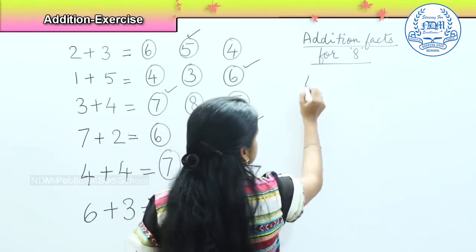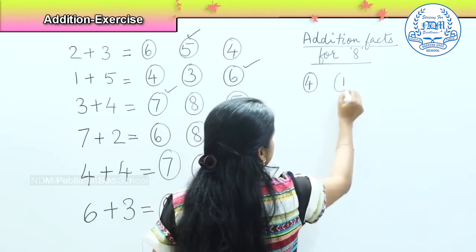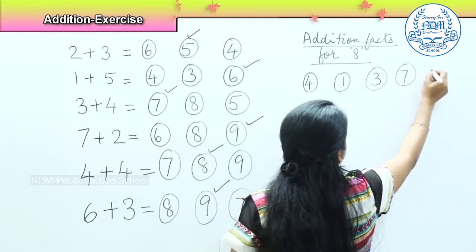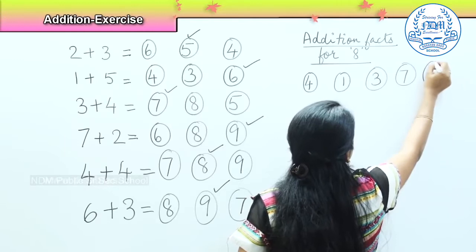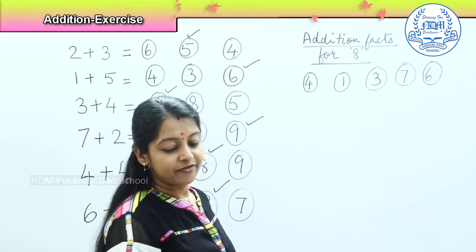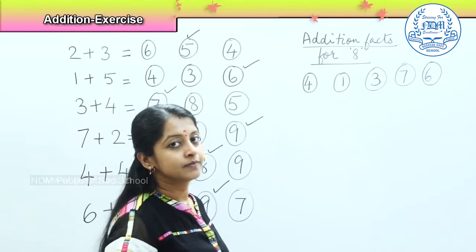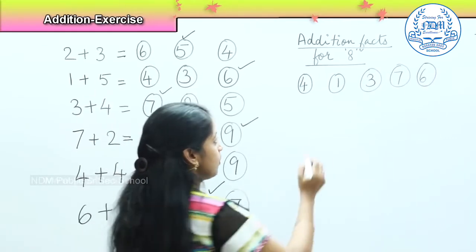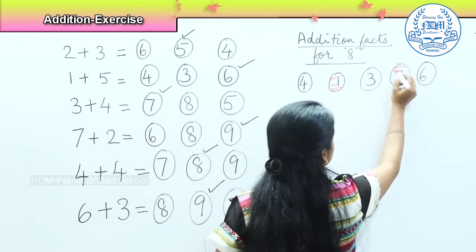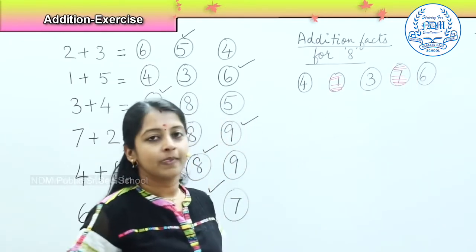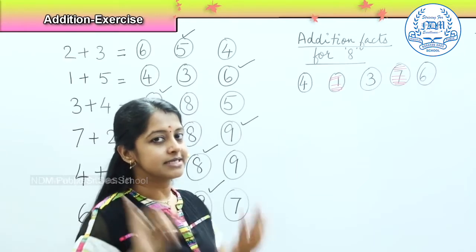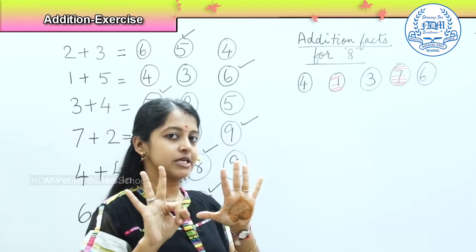So the first question is: I have 4, 1, 3, 7, 6. What is the addition fact, children? Which numbers, if I add, will give me number 8? If I select number 1 and number 7, I will get the addition fact of number 8. Shall we try adding with the fingers? 7, when added with 1, will give me the answer 8.